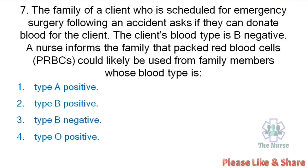Next question: The family of a client scheduled for emergency surgery following an accident asks if they can donate blood. The client's blood type is B negative. A nurse informs the family that blood could likely be used from family members whose blood type is: type A positive, type B positive, type B negative, or type O positive. Correct answer: Type B negative.